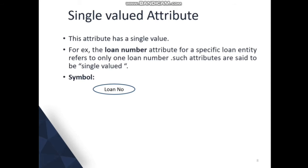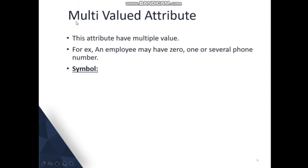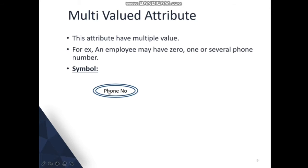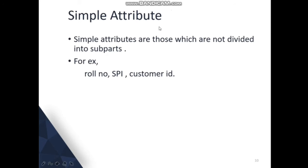A multi valued attribute can have multiple values. For example, an employee may have zero, one, or several phone numbers. Multi valued attributes are represented by a double ellipse or double oval.